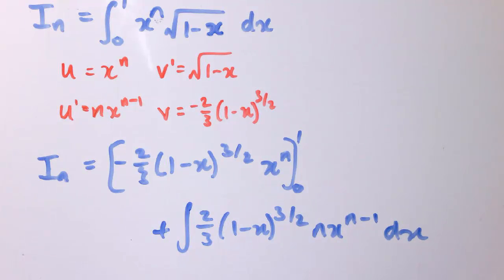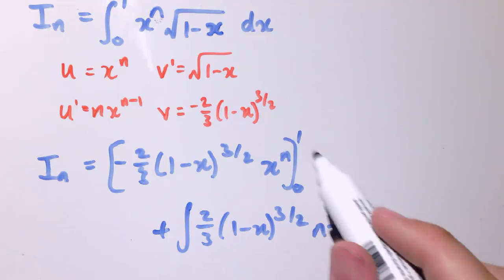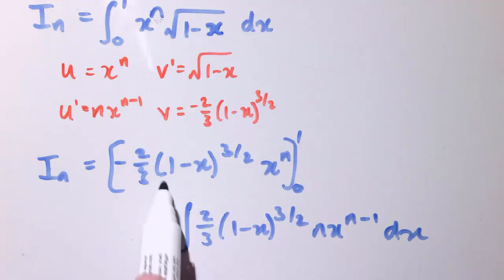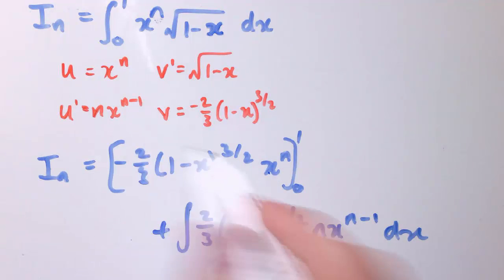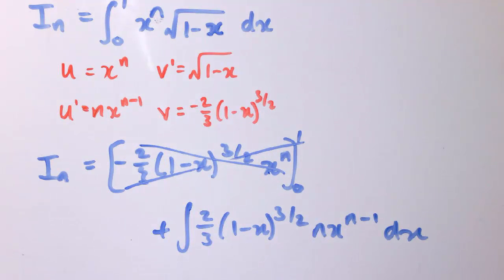Now, this doesn't look immediately like it's worked, but a little bit of persistence will get us there. So firstly, let's look at this bit here, this is just a number because we've got to substitute in 0 and 1. Now, when I substitute in 1, 1 minus x is 0, so this whole thing will be 0, and when I substitute in 0, x is just 0 then, so again this whole thing is 0. So this term here is just 0, and we can work without it.